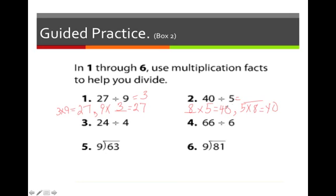So, if you know these multiplication facts, you would know that the answer is 8. So, let's go ahead and let's move through number 3 and 4. 24 divided by 4 equals 6. And the related facts are 6 times 4 equals 24, or 4 times 6 equals 24. Let's go ahead and do number 4. 66 divided by 6 equals 11. And the related multiplication facts are 11 times 6 equals 66, and 6 times 11 equals 66.